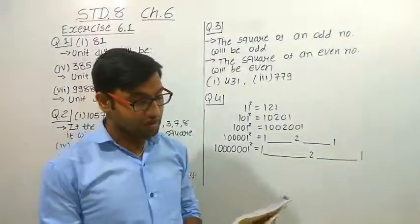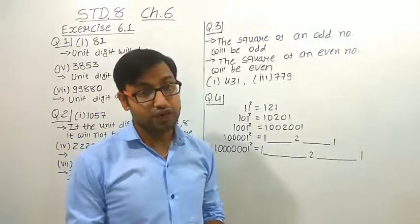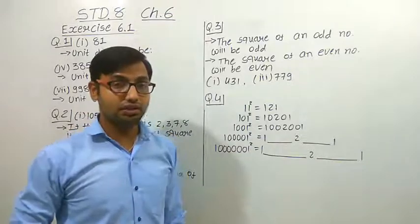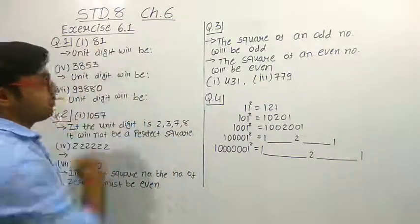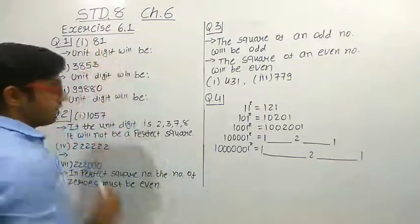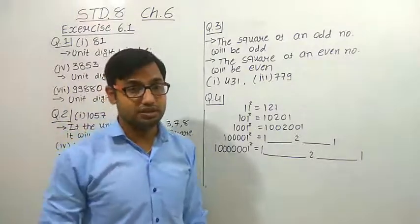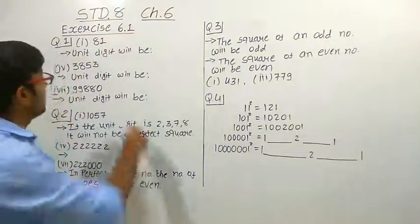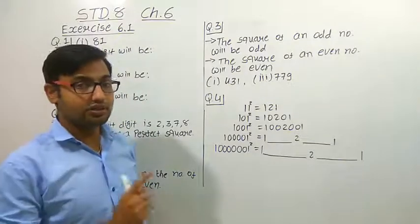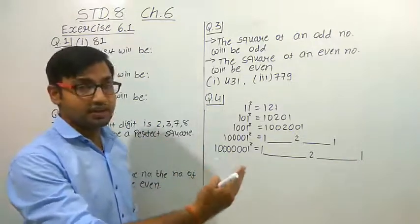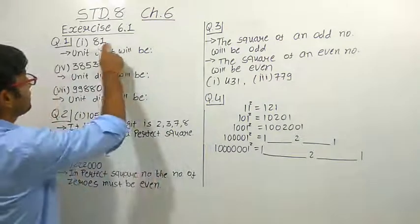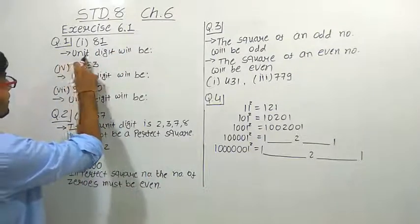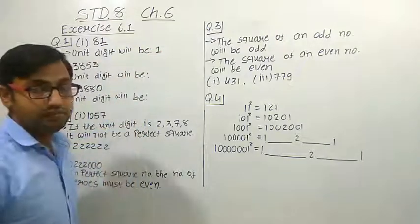The first question is: what will be the unit digit of the squares of the following numbers? Here we have given the number 81. What will be the unit digit if we do the square of this number? That depends on whatever digit is in the unit place. Here if there is a 1, and we make the square of 81, its unit digit will be the square of this digit — that is 1. So 1 squared is 1, meaning the unit digit will be 1.